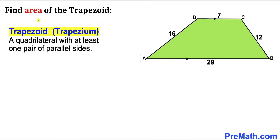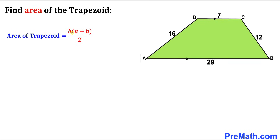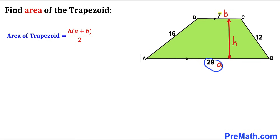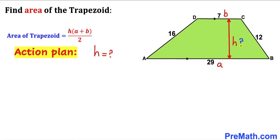A trapezoid is defined as a quadrilateral with at least one pair of parallel sides, as you can see in this diagram. It is also called a trapezium. Here side AB is parallel to side CD. The area of the trapezoid formula is H times (A plus B) divided by 2, where A and B are the bases and H is the height of the trapezoid. The values of A and B are given to us, and now our task is to calculate the height H.